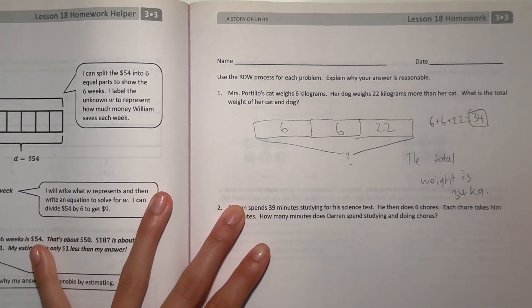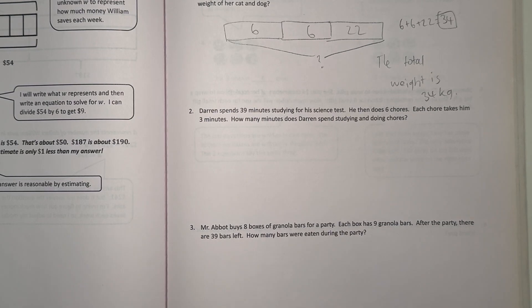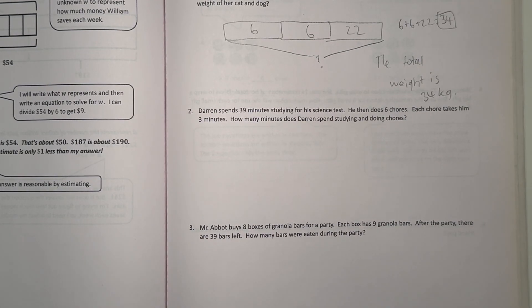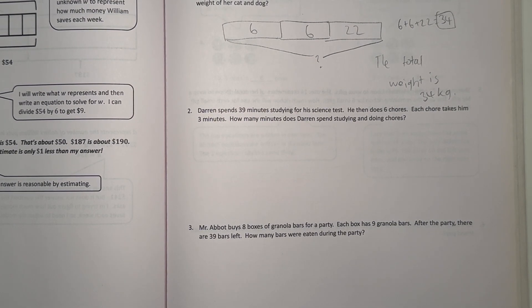Alright, number two. Darren spends 39 minutes studying for his science test. Then he does 6 chores. Each chore takes him 3 minutes. How many minutes does Darren spend studying and doing chores?